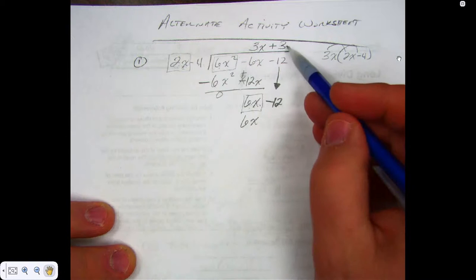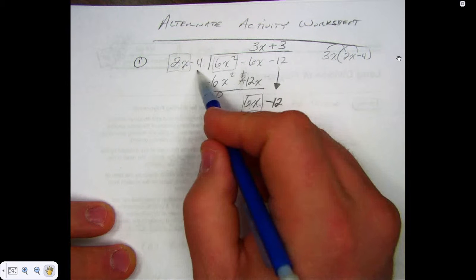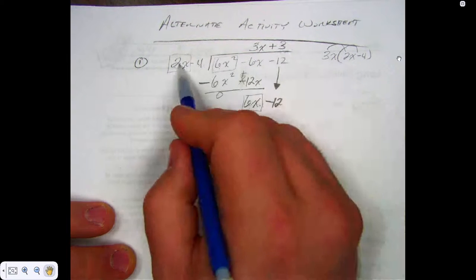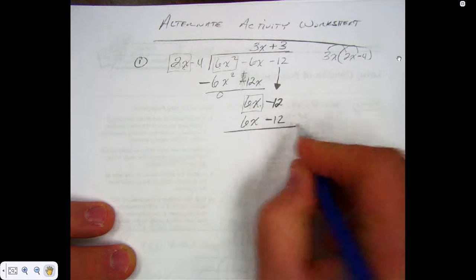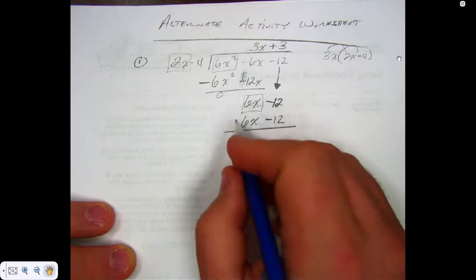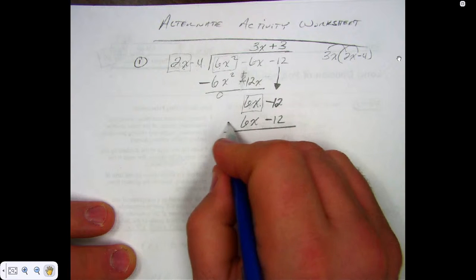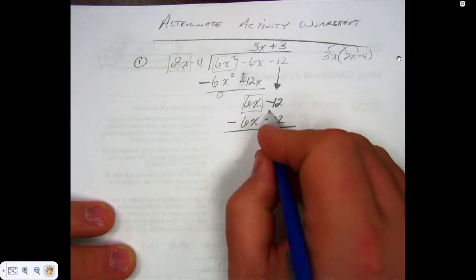What else do I have to do now? 3 times what? I have to multiply 3 times the 2x, but also the 3 times the negative 4, which gives me negative what? Now, when I change the sign here, that becomes a negative, and this becomes a what?